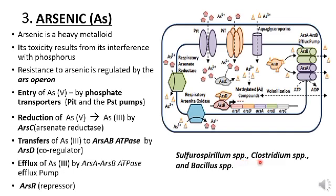Sulphurospirillum species, Clostridium species, and Bacillus species are involved in the arsenic resistance mechanism.